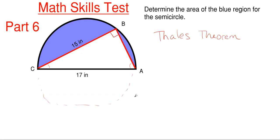So what I'm going to have to do is find the area of this triangle, and that just became so much easier using Thales theorem. So once I find the area of the triangle, I can subtract it from my semicircle area and I can get the area in blue.